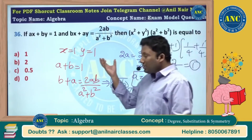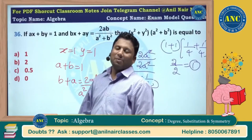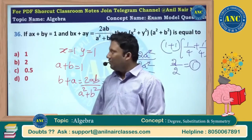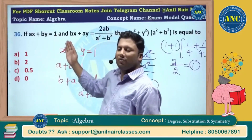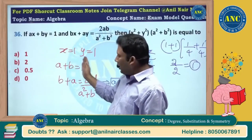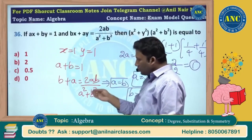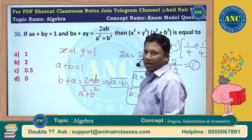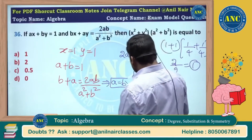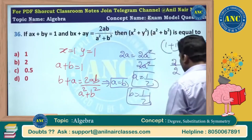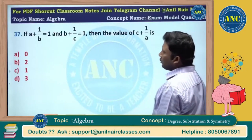Very very easy question — seems like a complex question, but once you solve it, it is very easy. I kept x=1, y=1, a plus b equivalent to 1, b plus a equivalent to 2. ab by a square plus b square is a symmetric function, so I made a equivalent to b.